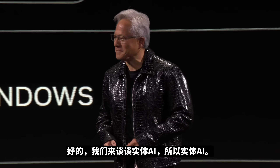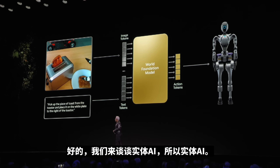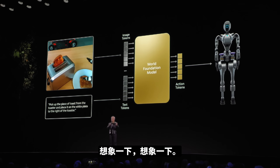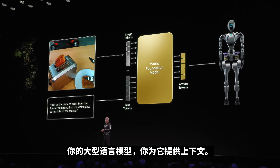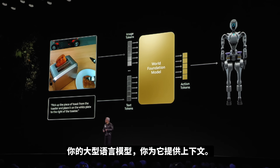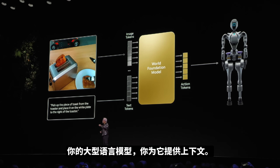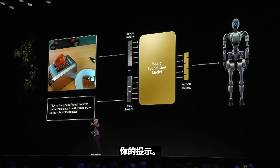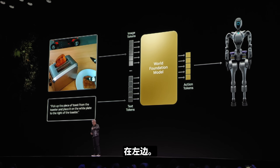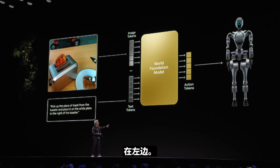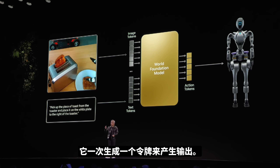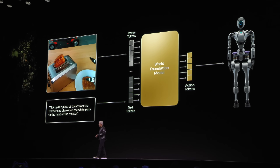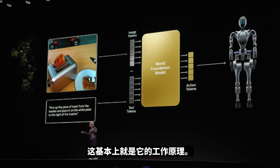Let's talk about physical AI. Imagine, whereas your large language model — you give it your context, your prompt on the left, and it generates tokens one at a time to produce the output. That's basically how it works.